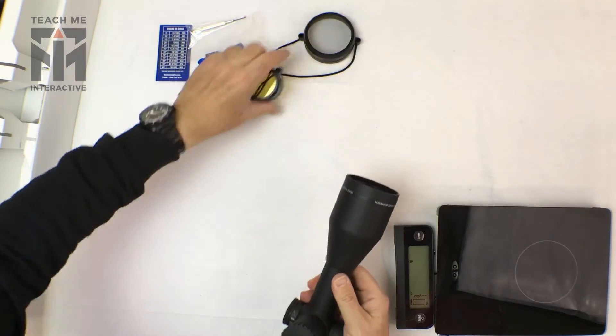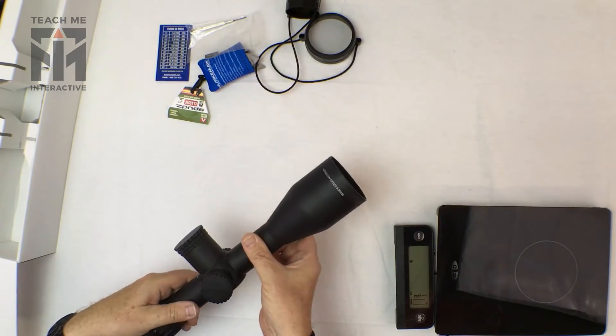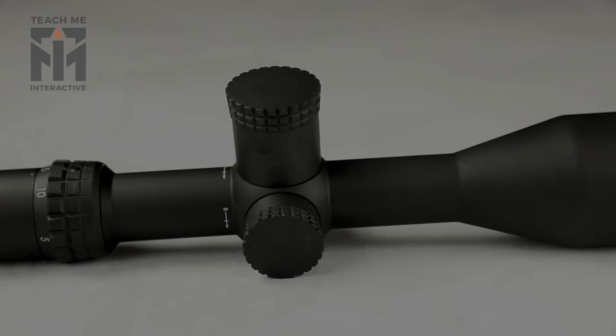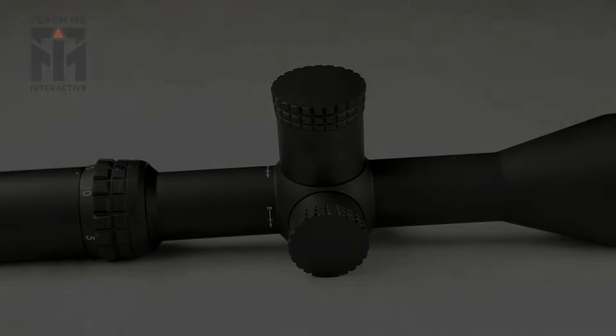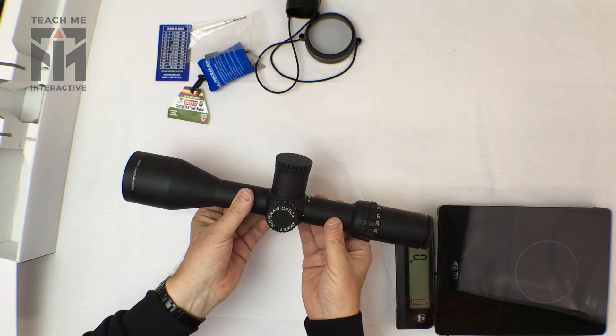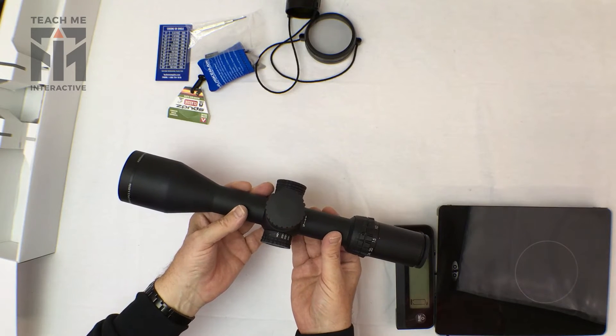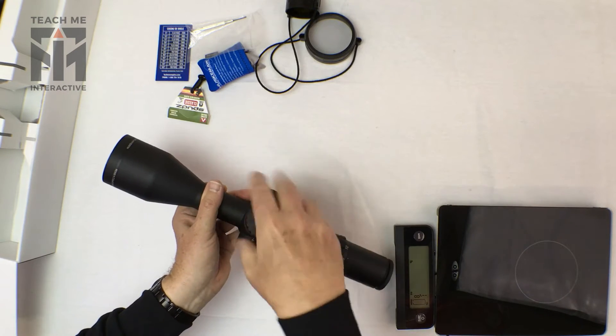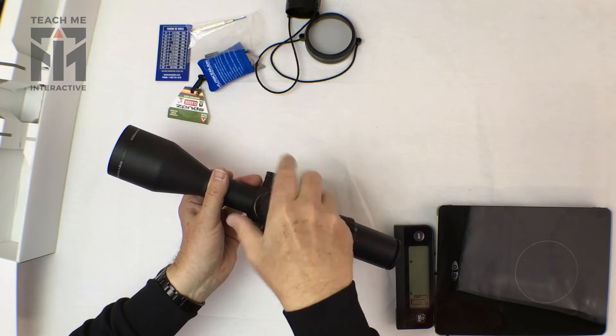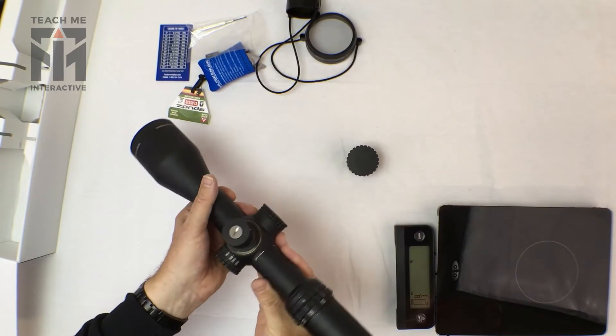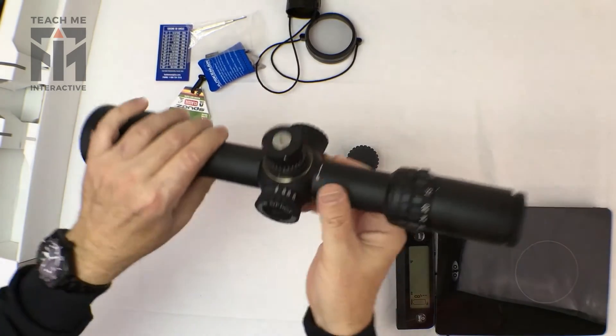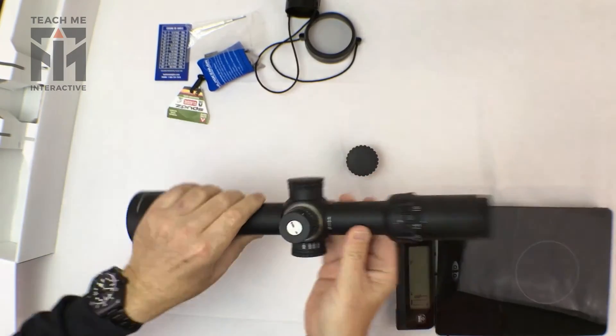And the covers. Pretty basic. And the first thing I notice about it is the size of that turret. Now, if I understand correctly, this 5x30x56 long-range scope has this turret here, this cap, and you set up the zero using this pretty basic turret. So it's fairly simple.